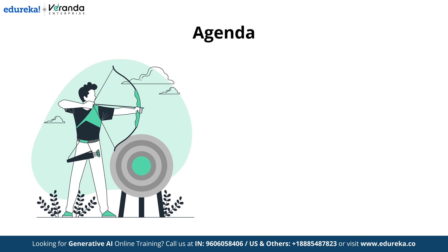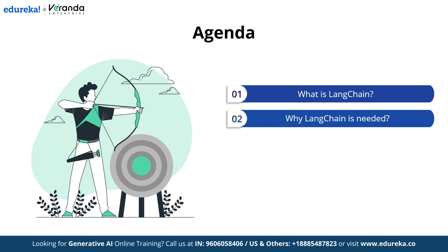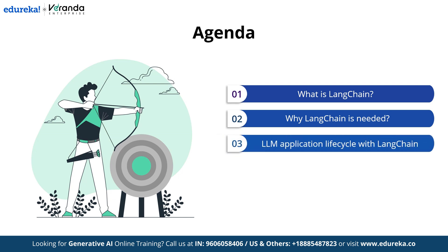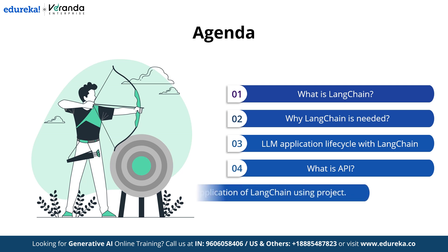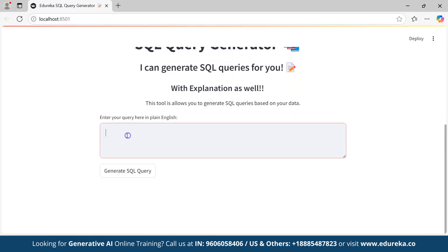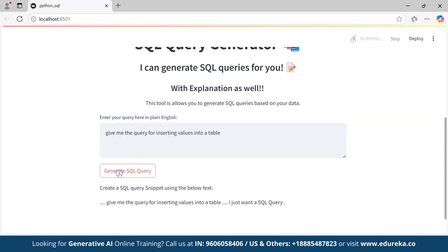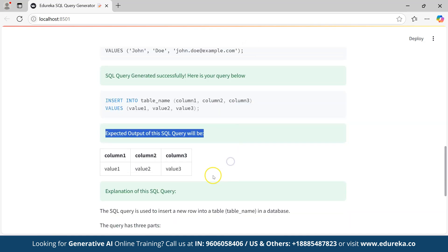Here's what we will cover today. First, we will understand what Langchain is and why it's such a game changer for AI development. Next, we will explore the LLM application lifecycle and learn how Langchain facilitates its implementation. We will then discuss APIs, their role in enabling seamless communication between systems and how they power LLM models. Finally, we will showcase a practical Langchain project — an SQL query feature that demonstrates its real-world applications with detailed code explanation.